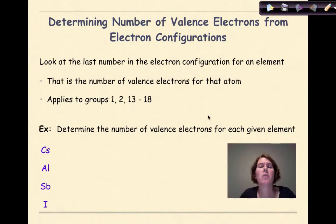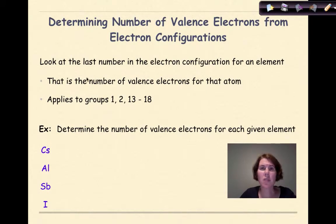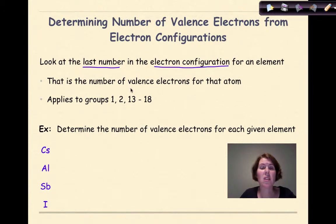Determining the number of valence electrons from electron configurations: all you have to do is look at the last number in the electron configuration for a given element, and that last number is the number of valence electrons for that atom. This is the general trend for groups 1 and 2, and 13 through 18 on your periodic table.